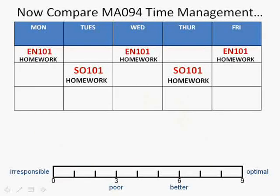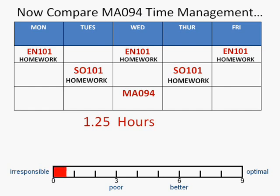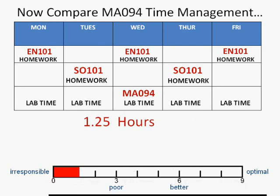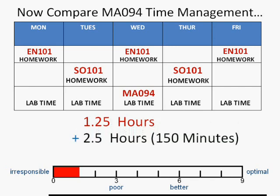Now here comes the big kicker. Let's compare this to our Math 94 time management, which should be the same, shouldn't it? Your Math 94 class actually only occurs once a week for an hour and 15 minutes — that's 1.25 hours. Look at our thermometer; it only goes up to here. If that's all you do, you're being absolutely irresponsible. Even if you do the additional 150 minutes in the lab — that's two and a half hours — you'll still be in the poor range.